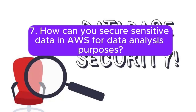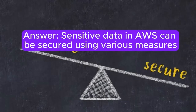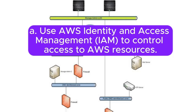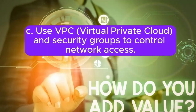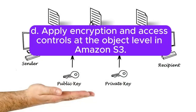7. How can you secure sensitive data in AWS for data analysis purposes? Answer: Sensitive data in AWS can be secured using various measures. A. Use AWS Identity and Access Management (IAM) to control access to AWS resources. B. Implement encryption at rest and in transit using services like AWS Key Management Service (KMS) and SSL/TLS. C. Use VPC (Virtual Private Cloud) and Security Groups to control network access. D. Apply encryption and access controls at the object level in Amazon S3.